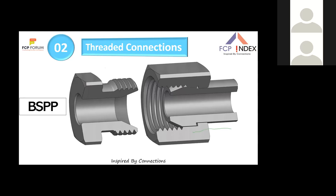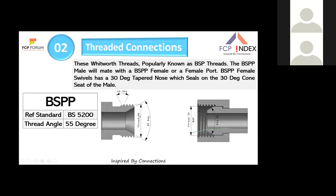The most popular thread connection is BSP — the British Standard Pipe, also known as Whitworth thread. The BSP parallel male mates with a BSP female port. The male has a 30-degree tapered nose, and that tapered cone matches into the female port. The reference standard is BS 5200 and the thread angle is 55 degrees.